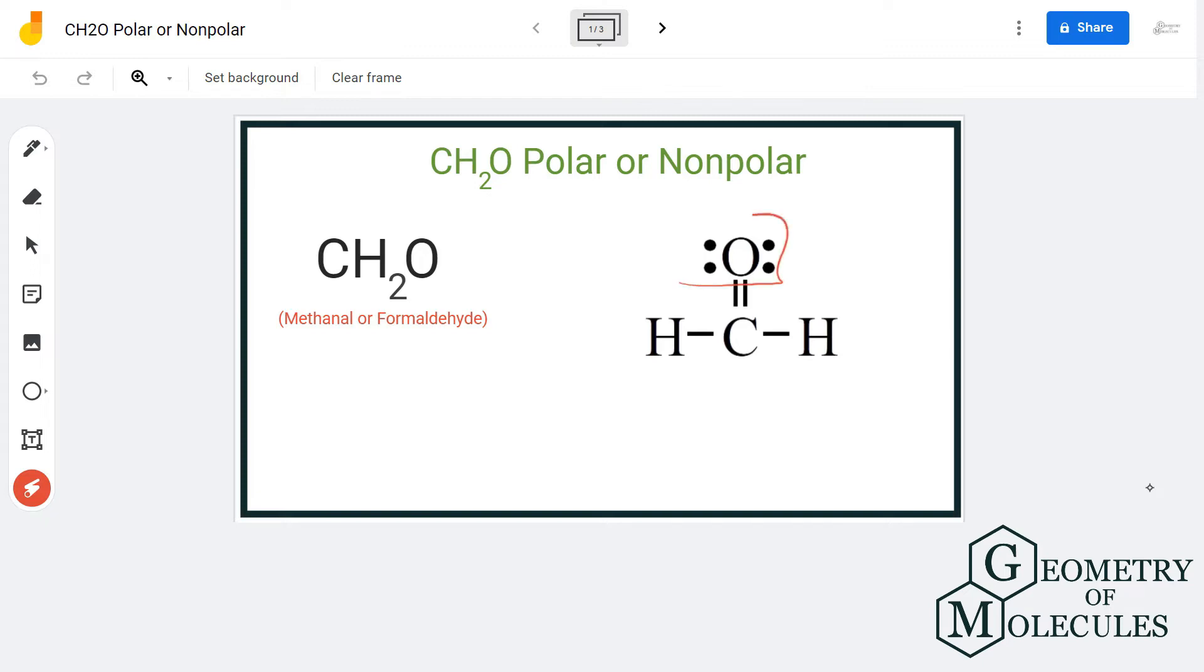Because oxygen here is the most electronegative atom, and due to the differences of electronegativities, there are chances that this molecule could be a polar molecule. To further confirm it, we will first look at its shape.